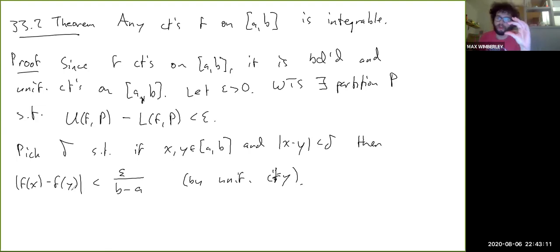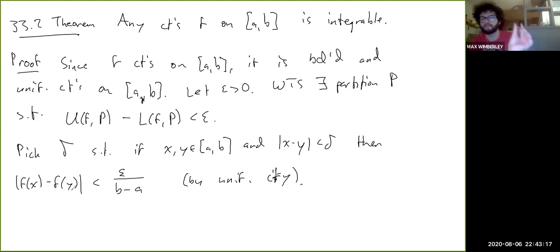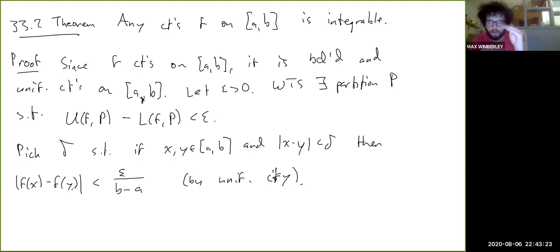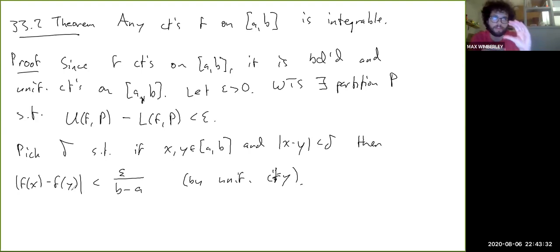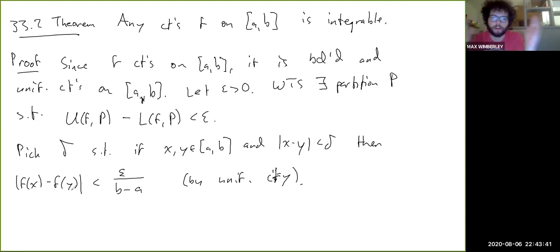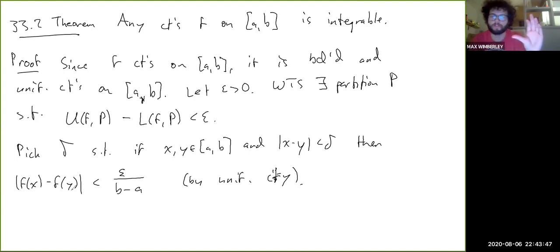We're going to use this to bound the difference between the capital M and little m of F on some sub-interval. If we make the mesh of P less than delta, then the supremum and infimum will be within that bound from each other. If we have a constant error bound on any one rectangle, the overall error between upper and lower sums on [a, b] is just our per-interval error bound times the total length (b - a). That's why we choose epsilon over (b - a).